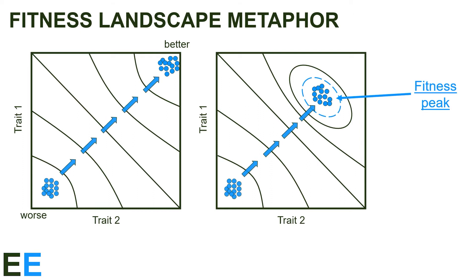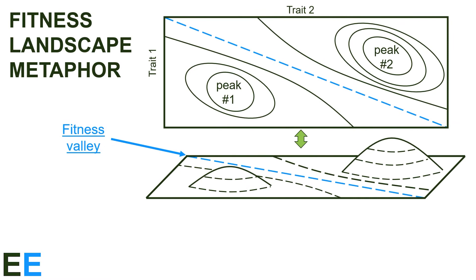Once a population is at the maximum height on the fitness landscape, it will tend to stay there. A population moving off a peak is highly unlikely because it would require the individuals lower down on the surface to reproduce more than the ones at the peak.